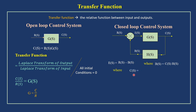Now deriving for C of S. The block diagram output is C of S and the block input is E of S. C of S is the product of E of S and G of S. Substituting E of S as R of S minus B of S: C of S equals (R of S minus B of S) into G of S. Then substituting B of S as C of S into H of S: C of S equals (R of S minus C of S times H of S) into G of S.